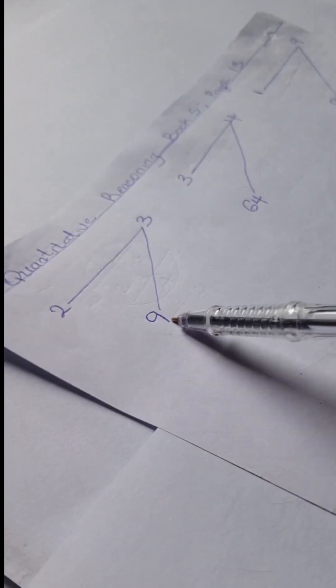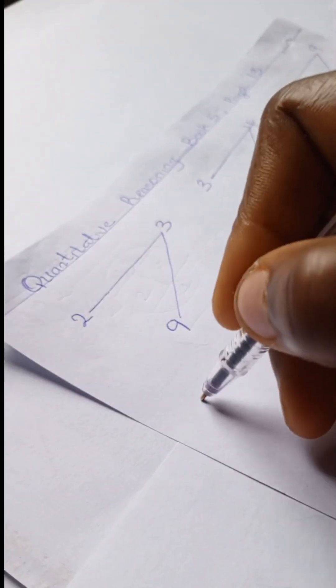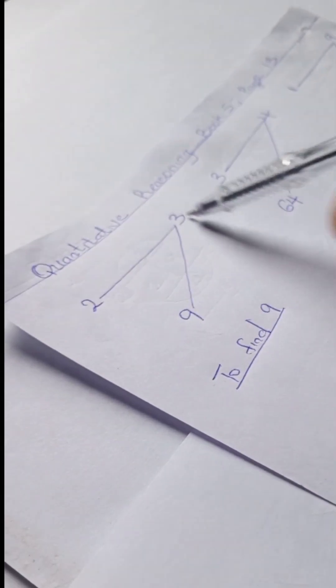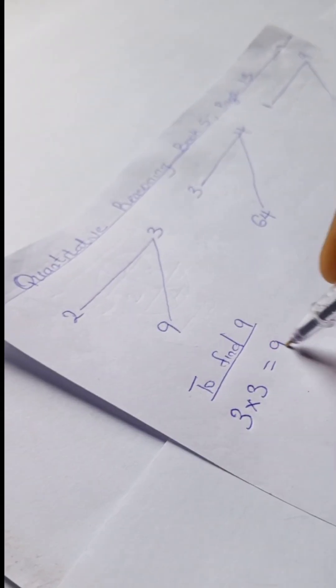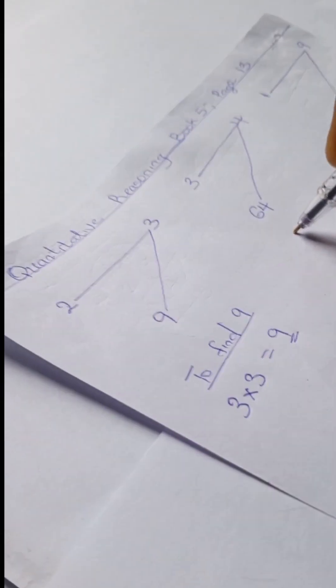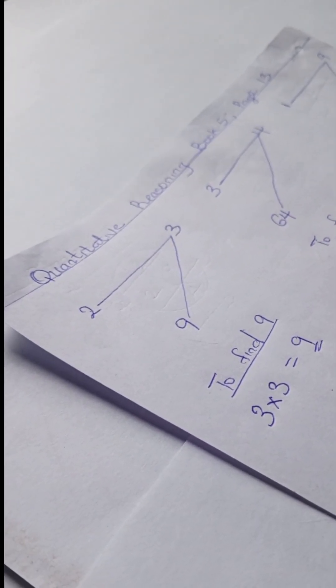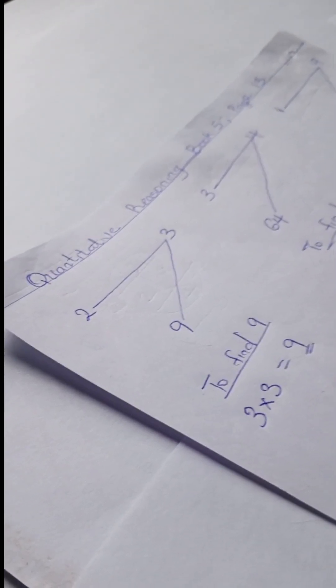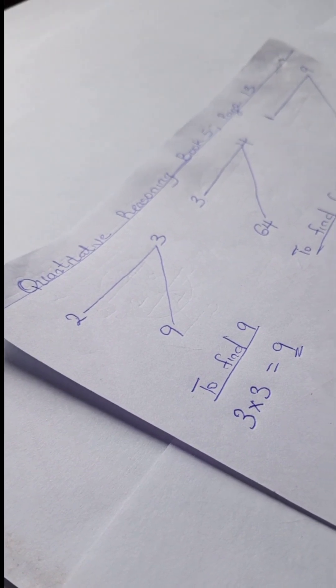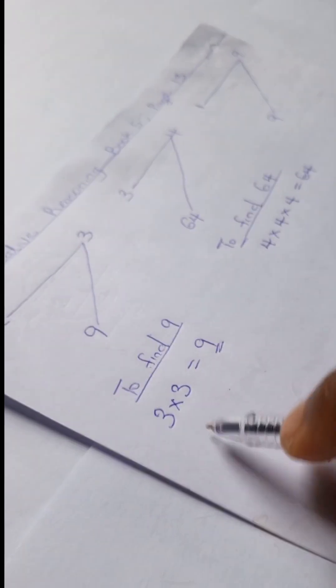Okay, so we have 2, 3, 9 | 3, 4, 64 | and here we have 1, 9, and 9. To find this 9, we simply have 3 into two places — that's 3 times 3, and 3 times 3 is 9. To find 64, we're going to have 4 into three places: 4 times 4 times 4, and 4 times 4 times 4 is 64.